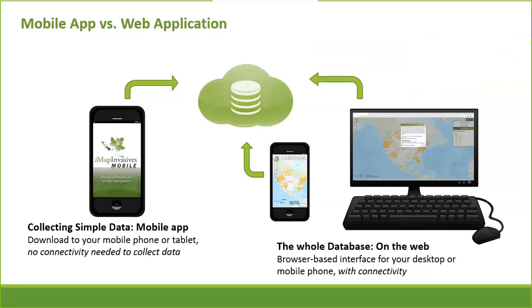There's also a mobile application that John will talk about in more detail later. This mobile app is still super valuable because it lets you collect simple data very quickly when you're out in the field, especially when you don't have connectivity — or even if you do, for quickly collecting presence or not-detected data to upload later. It's standalone software you download onto your phone, and when you upload records they go straight into the interface.